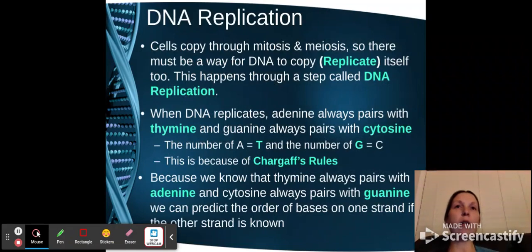So we know, based on what we learned last year with cell division, that the DNA is replicated in the cell to allow for mitosis and meiosis to occur. And this is a process called DNA replication. So when it replicates, adenine will always pair with thymine and guanine will always pair with cytosine. There is not going to be a change there. That means that the number of A is equal to the number of T and the number of G is equal to the number of C, which is what we refer to as Chargaff's rule.